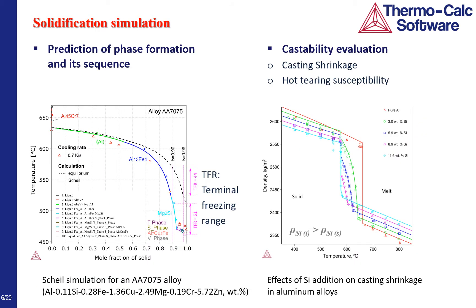Most aluminum alloys start with casting, so let's start with the solidification simulations. For most people, the goal is to predict the phase formation and its formation sequence during the course of solidification. On the left-hand side is an example with a 7075 alloy. The dashed line corresponds to an equilibrium calculation and the solid line to a Scheil simulation. We see the predicted primary phase and the particles that might form as grain boundaries.